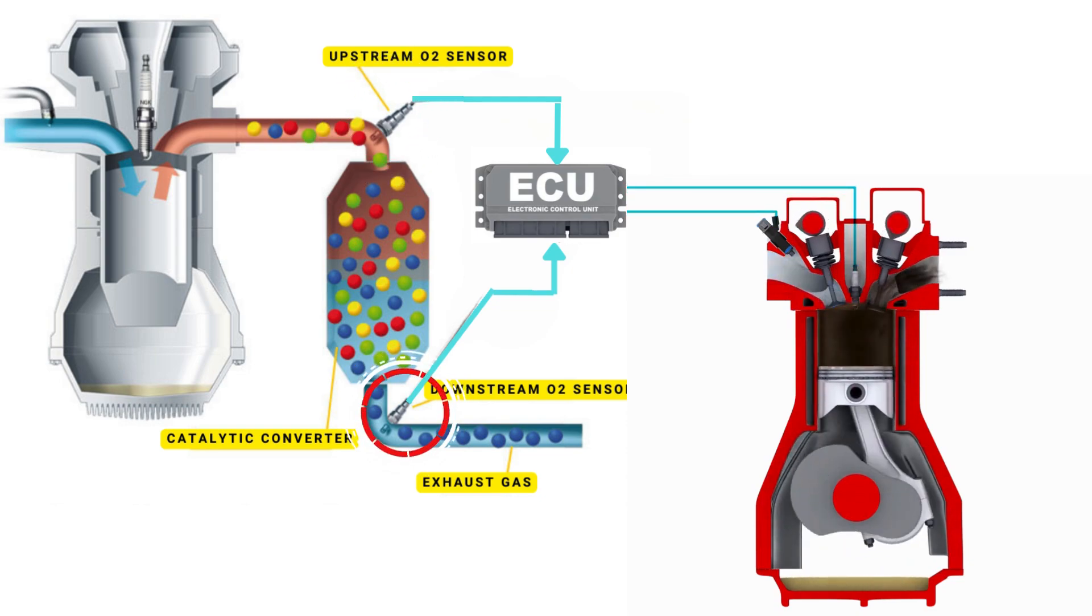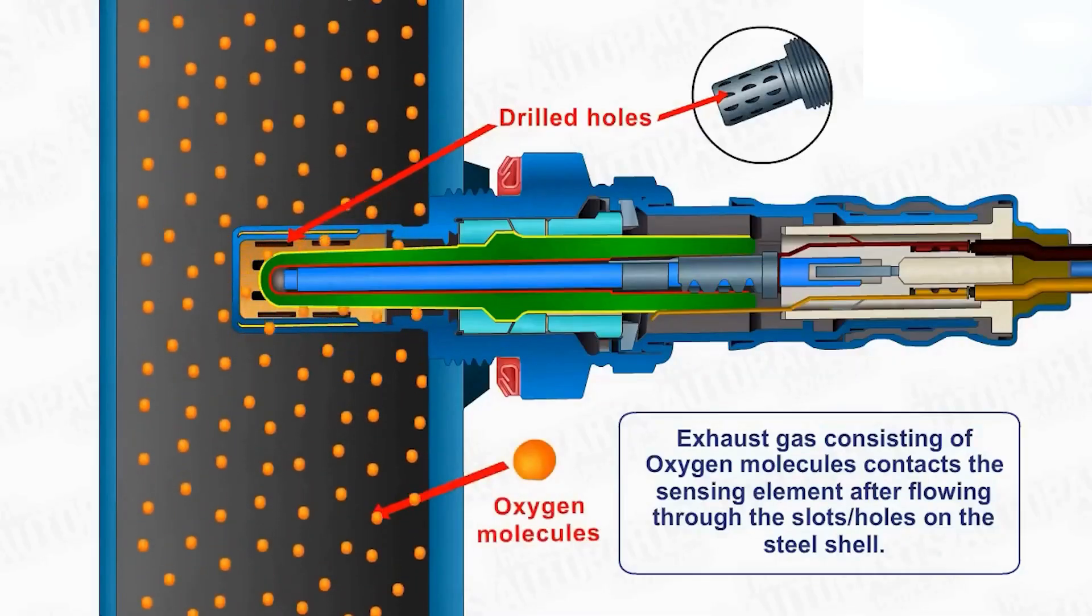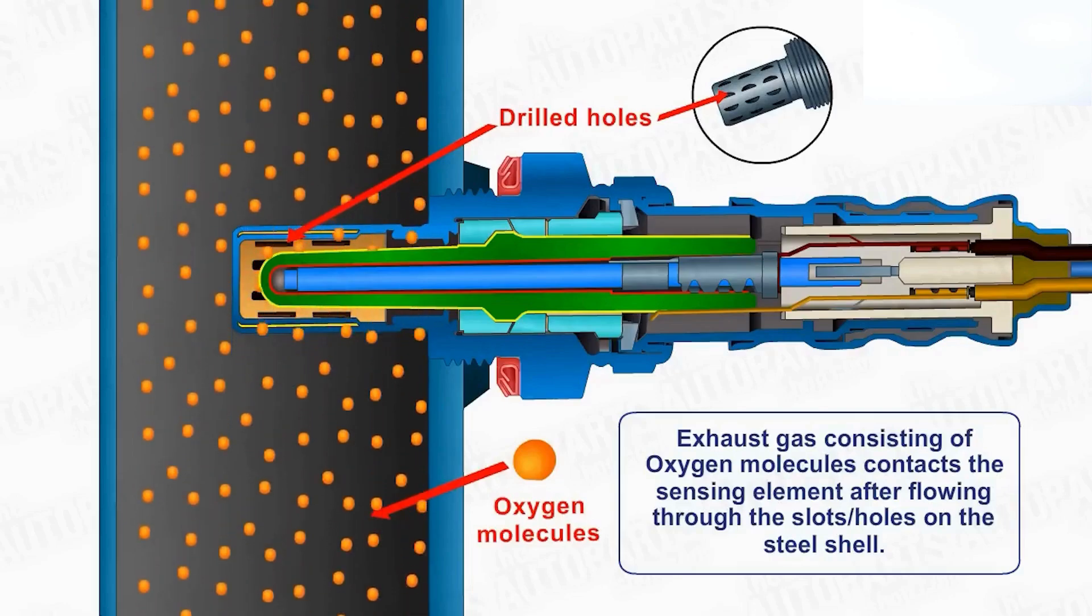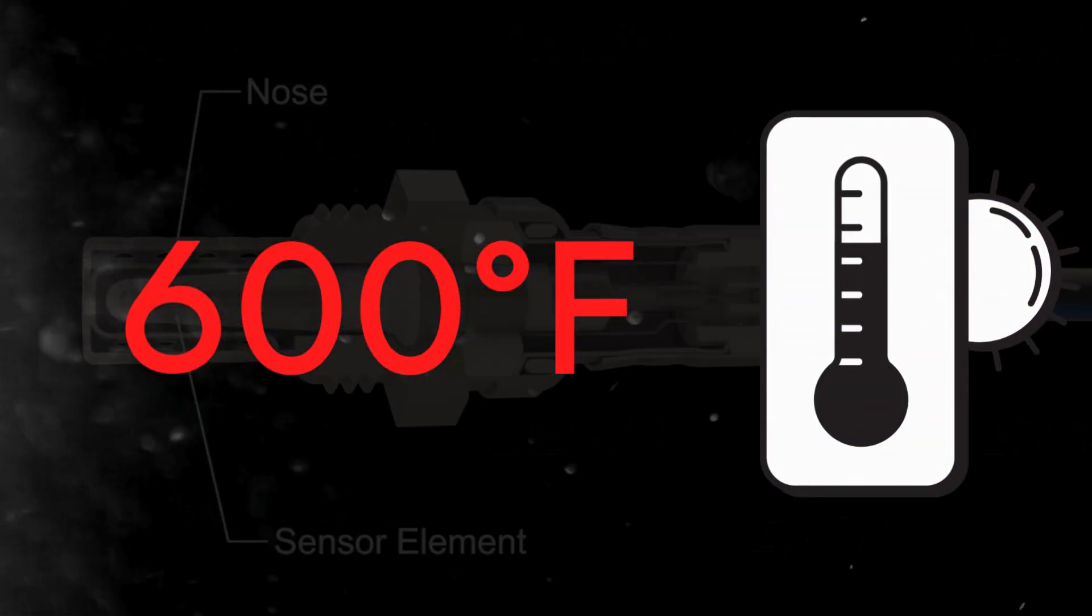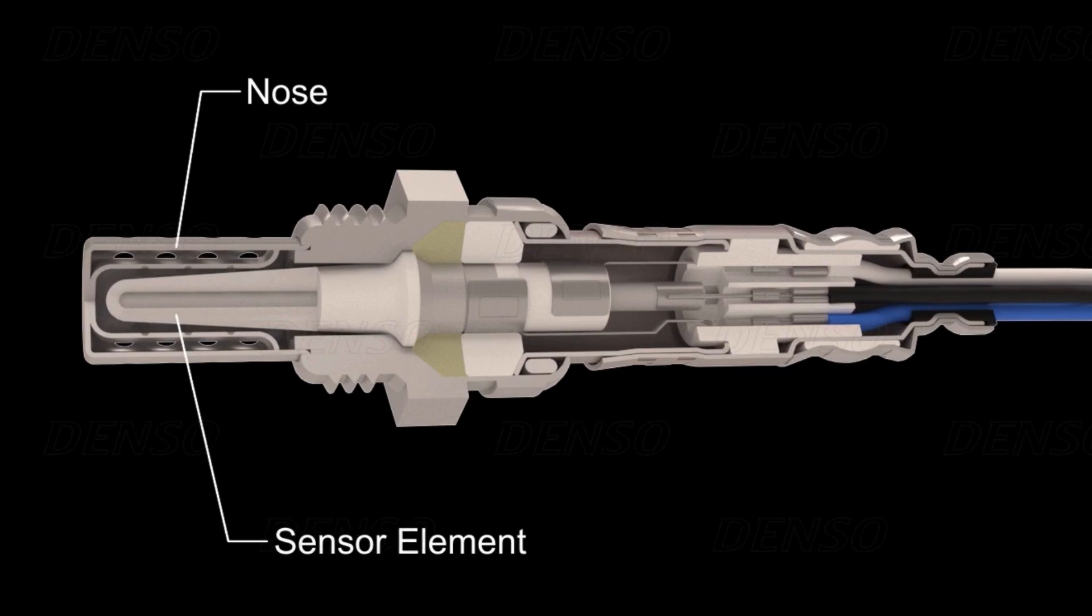But here's the thing. An oxygen sensor won't function correctly until it's heated to a certain temperature, around 600 degrees Fahrenheit for conventional sensors. That's where the heater circuit comes in. It's designed to warm up the sensor quickly, so it starts working sooner.